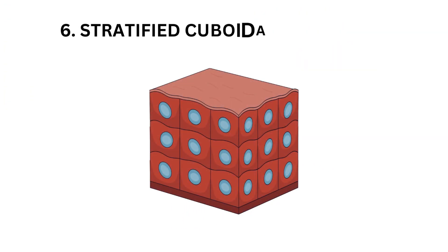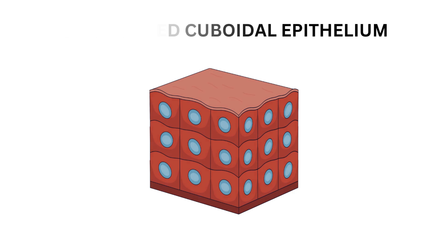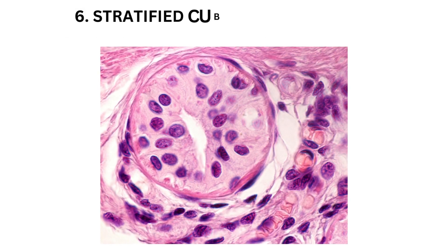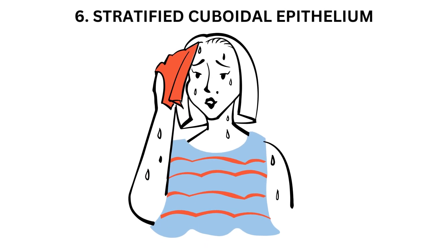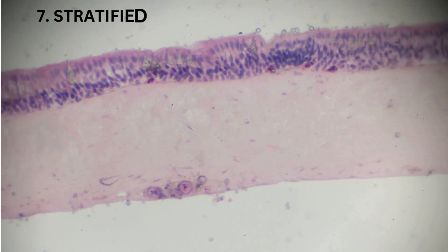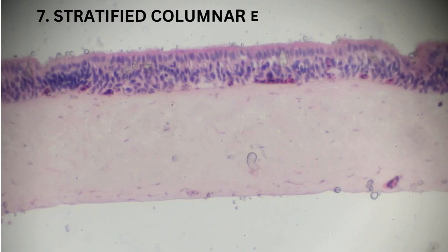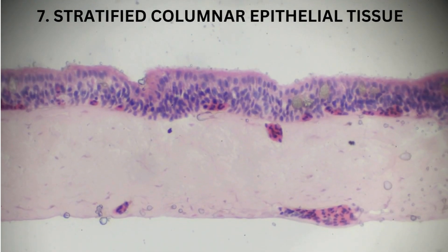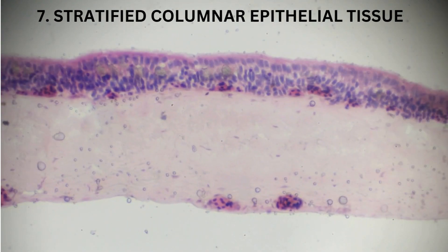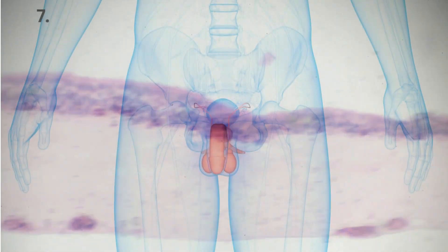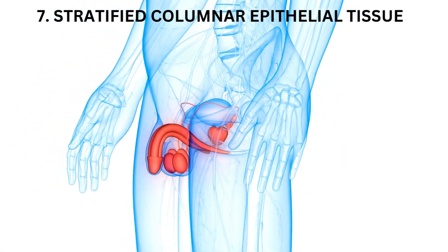Stratified cuboidal epithelium consists of multiple layers of cube-shaped cells. It is rare in the human body, found in some ducts of sweat glands and mammary glands. Stratified columnar epithelium consists of multiple layers of column-shaped cells, and is also rare, found in some parts of the male urethra and in large ducts of some glands.